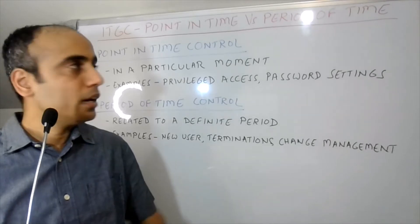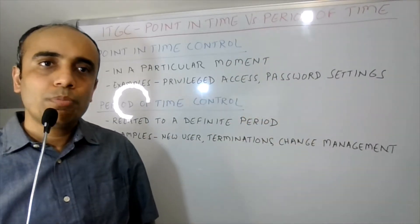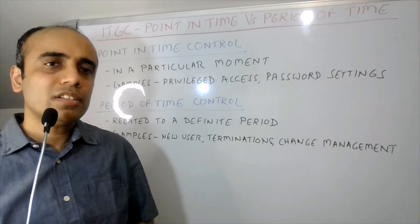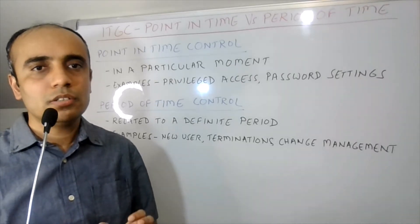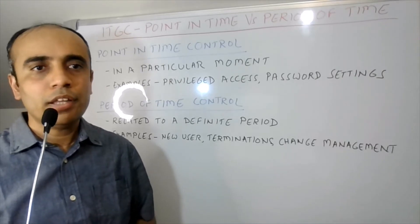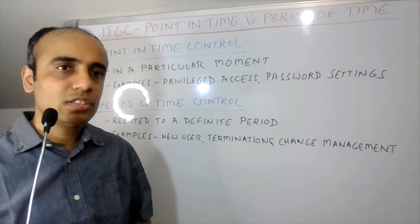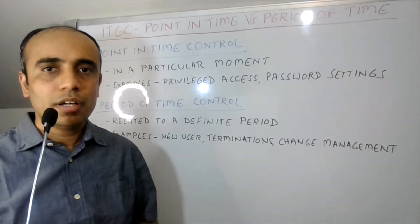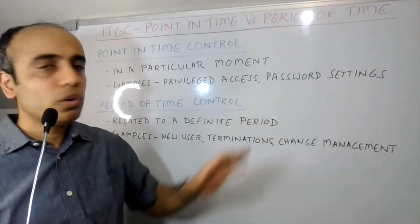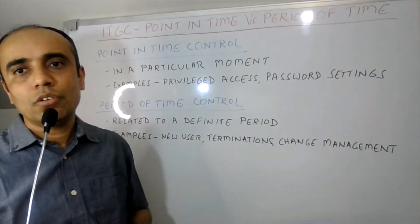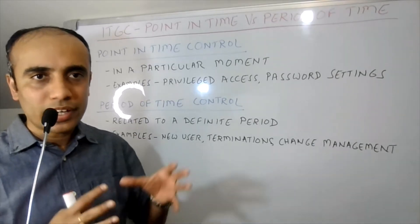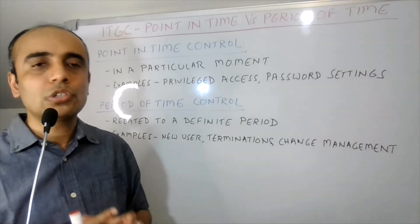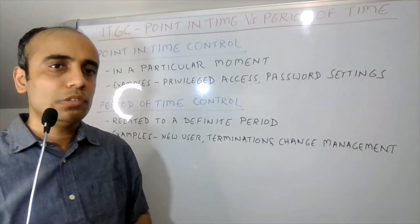Today we'll understand what is meant by point in time versus period of time control in the context of the risk, audit, or compliance world. As the name suggests, point in time simply refers to a particular moment. There are several control areas like privilege access and password settings where we get a snapshot of the control environment at a given time — how the accounts or settings looked at that given moment. That's why such controls are referred to as point in time controls.